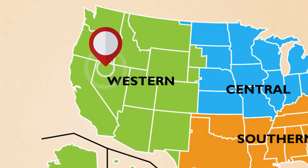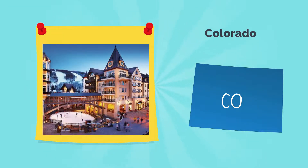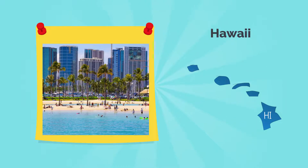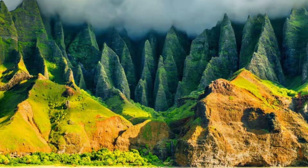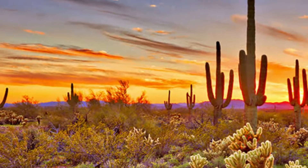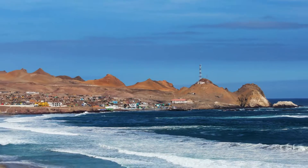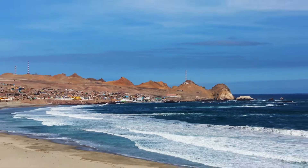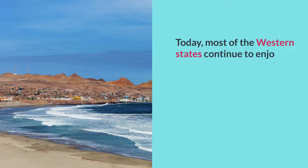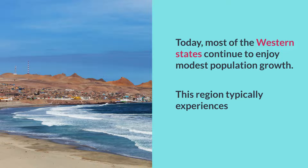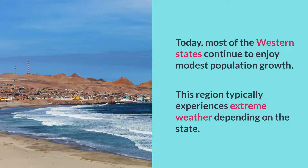The West is the fourth and final region making up the USA, containing 13 states. Some notable Western states include Wyoming, Colorado, California, Alaska, and Hawaii. This region is known for its diverse and beautiful natural terrain, including the tallest mountains, colorful deserts, lush forests, and the Pacific Ocean coastline. Today, much of the Western states continue to enjoy modest population growth. This region typically experiences extreme weather, depending on the actual state.